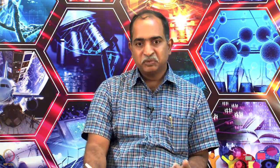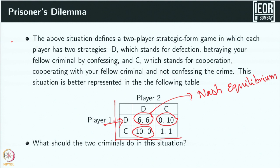DD is a Nash equilibrium. But here is an interesting situation: when both cooperate (CC) they each get only 1 year imprisonment, but CC is not a Nash equilibrium — they will never play CC. Each player thinks that if they cooperate, the other will defect. Therefore, defecting is better, and by symmetric reasoning, DD becomes the Nash equilibrium.